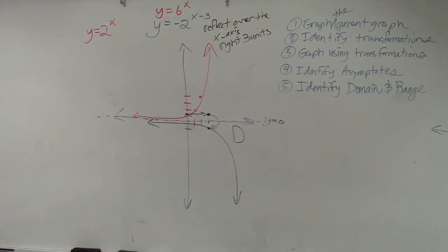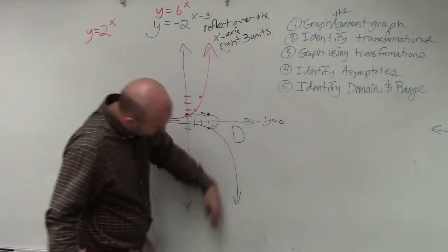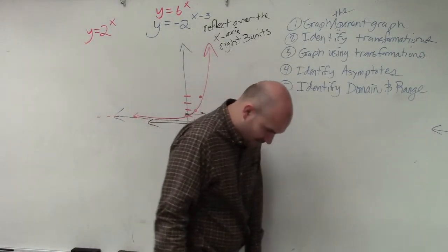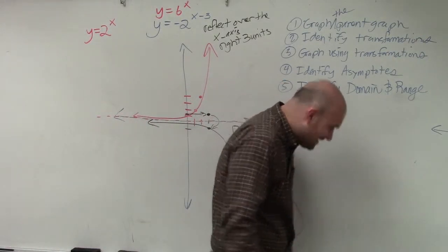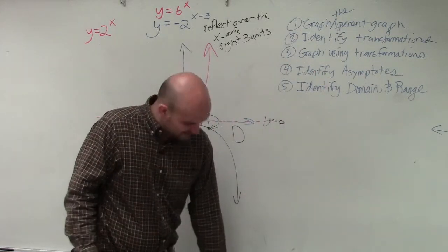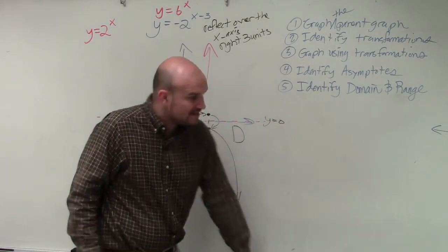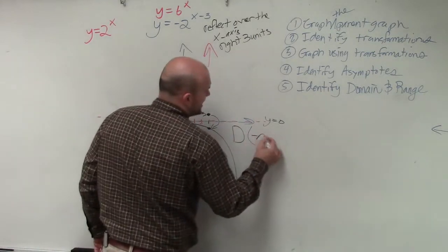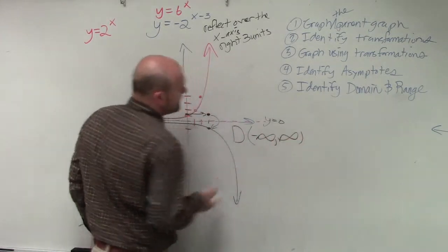To the left direction is negative. And then how far to the right is the graph going to go? Infinity. It's going to go very slowly because it's shooting down, but it's still going over very slightly. So the domain is from negative infinity to infinity.